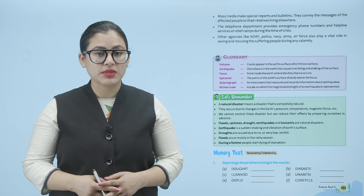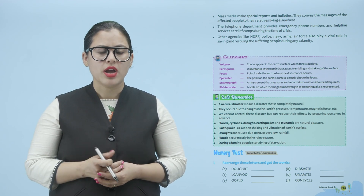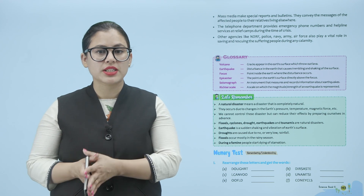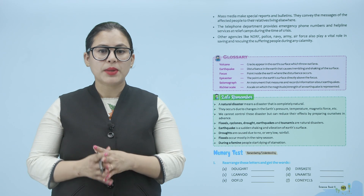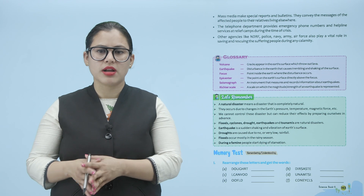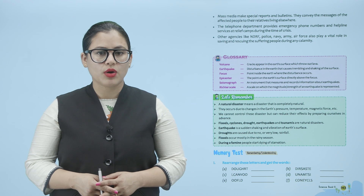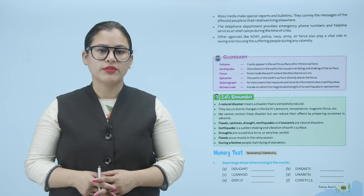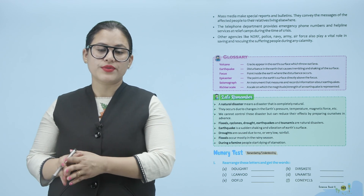Let's remember: a natural disaster means a disaster that is completely natural. They occur due to changes in the earth's pressure, temperature, and magnetic force. We cannot control these disasters but can reduce their effects by preparing ourselves in advance. Floods, cyclones, drought, earthquakes and tsunamis are natural disasters. An earthquake is a sudden shaking and vibration of the earth's surface. Droughts are caused due to no or very low rainfall. Floods occur mostly in the rainy season. During a famine, people start dying of starvation.